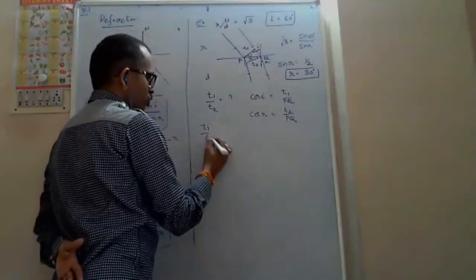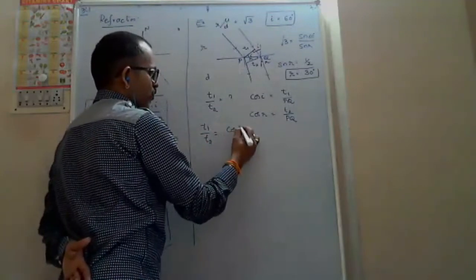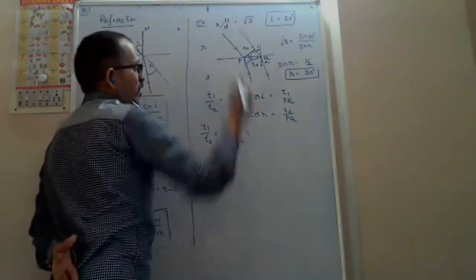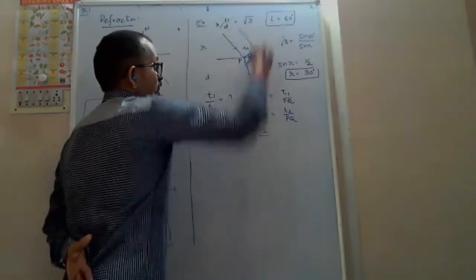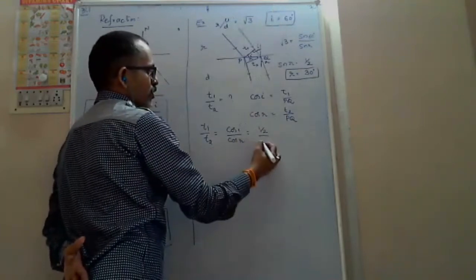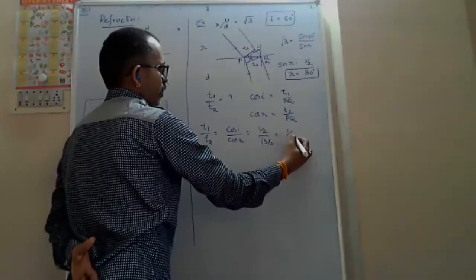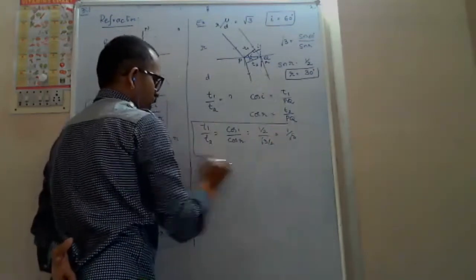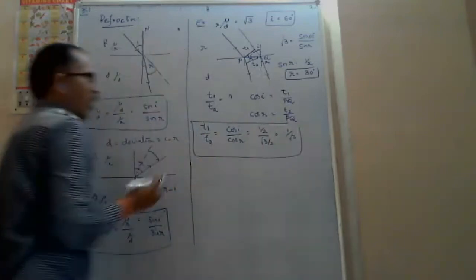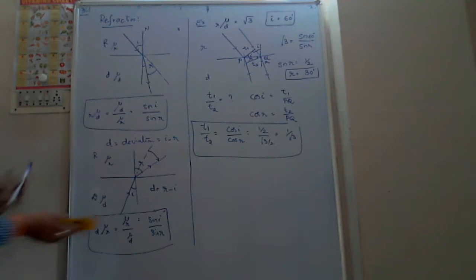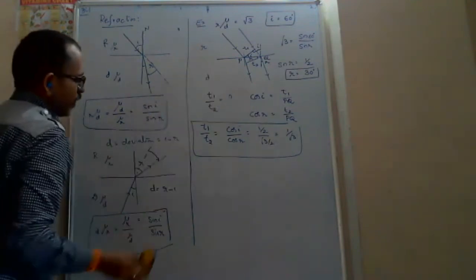T1 by t2 equals cos i by cos r. Cos 60 degrees by cos 30 degrees gives 1 by 2 divided by root 3 by 2, which is 1 by root 3. This is the ratio of widths of incident and refracted beams — one example of using Snell's law in a different way.